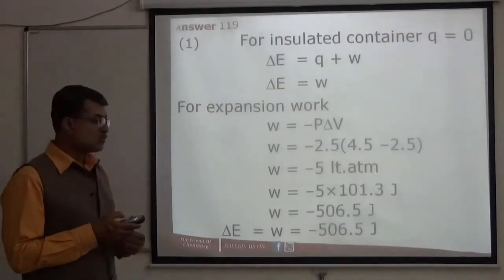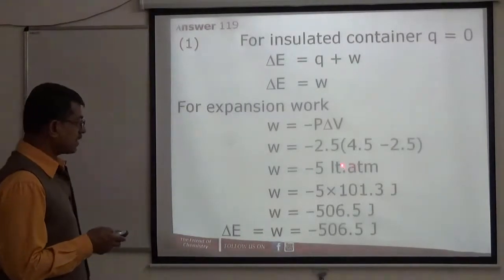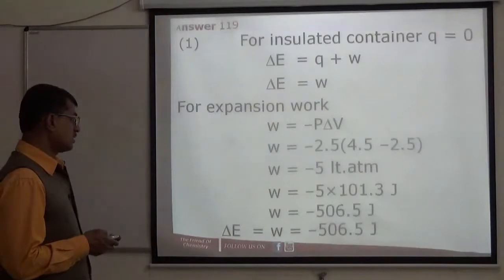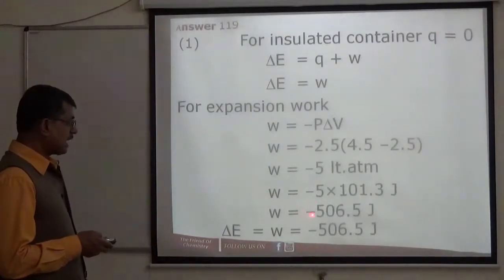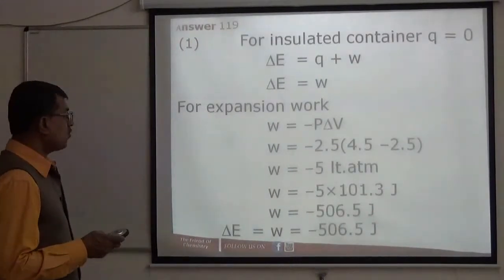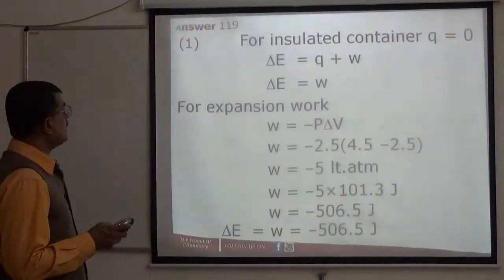Convert liter atmosphere to joules. One liter atmosphere equals 101.3 joules. Calculate this, it comes to minus 506.5 joules. This exact option is not there.